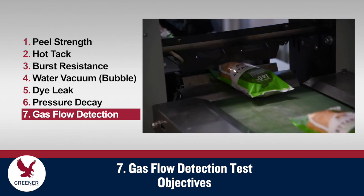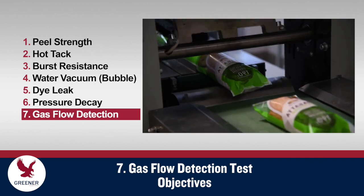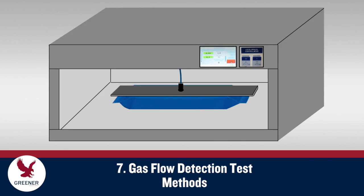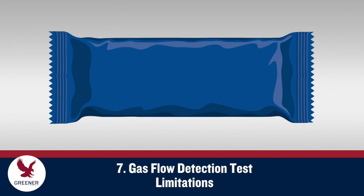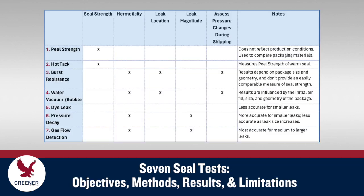Gas flow detection tests also measure the presence and magnitude of leaks. A package is inflated or evacuated with a needle probe, and the device monitors the gas flow required to maintain a set pressure level. Any gas flow required to maintain a given pressure indicates the presence and magnitude of leaks. Since pressure levels produced by gas flow detection devices are limited, accuracy is best for medium to larger sized leaks. This summary chart will help you compare all seven seal tests.